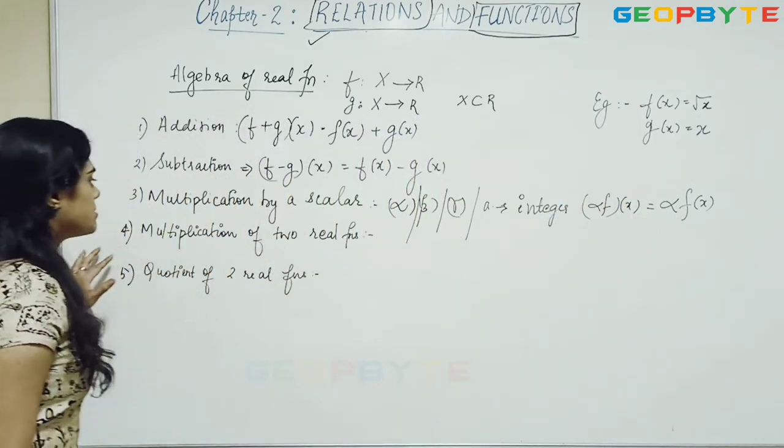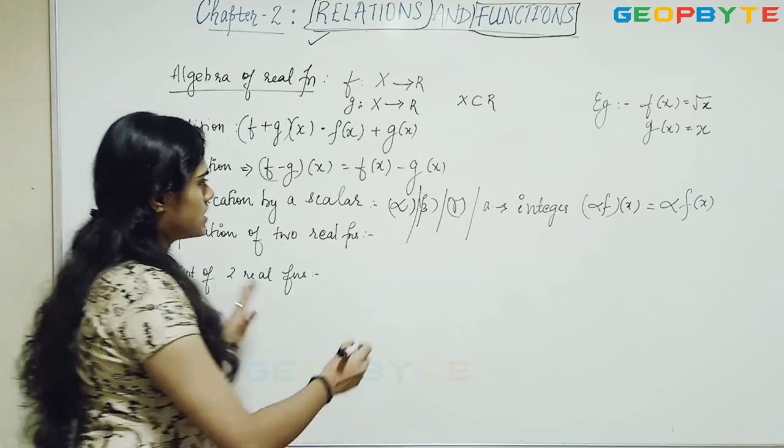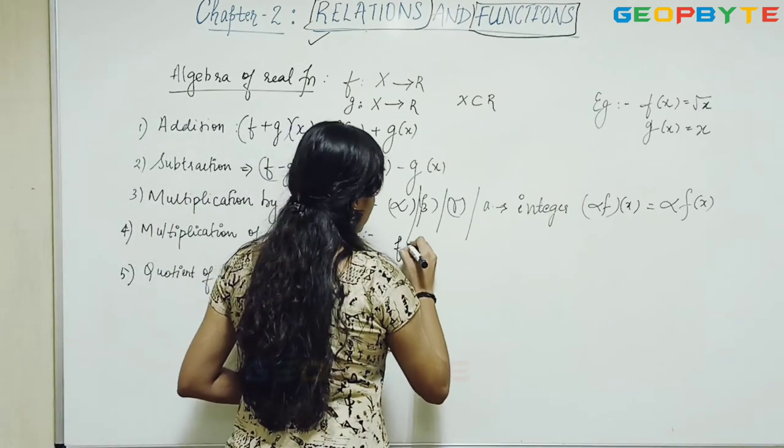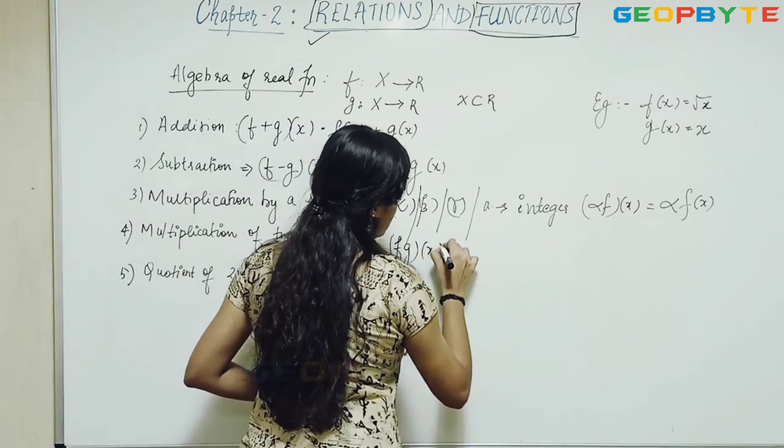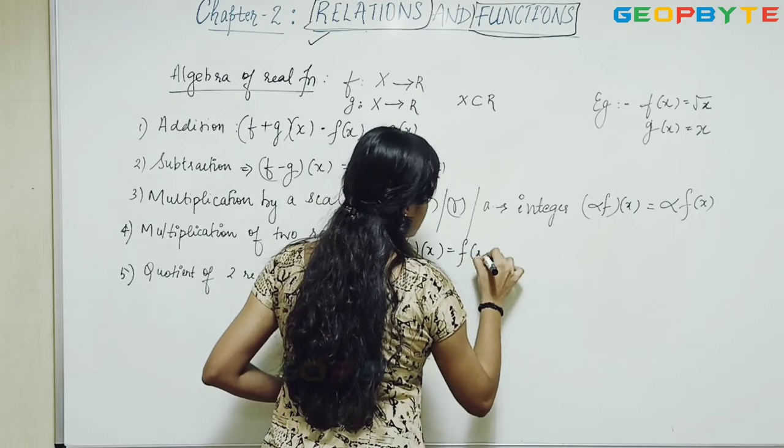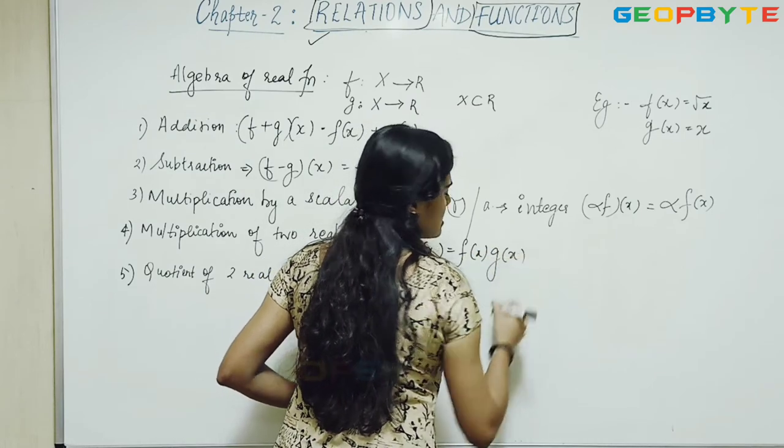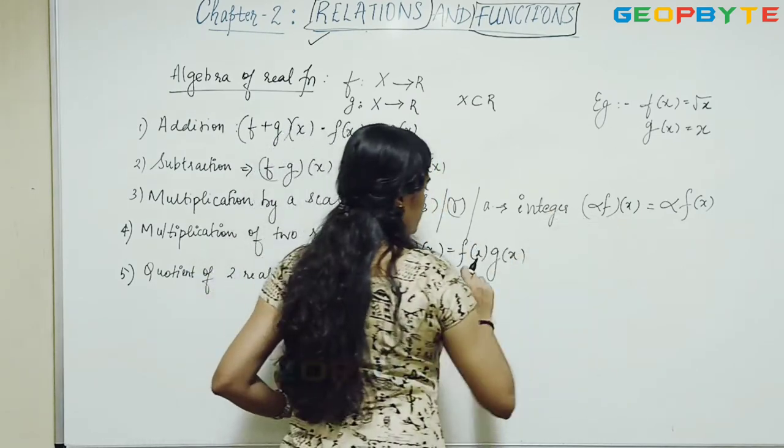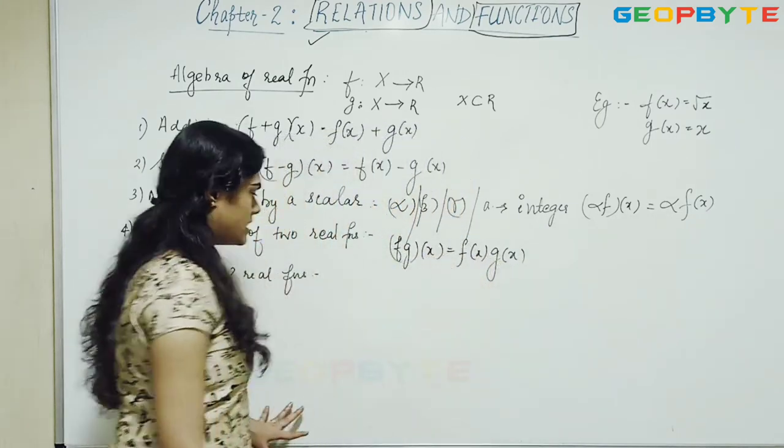And what is the multiplication of two real functions? That is, f times g of x is equal to f of x into g of x. Similarly, instead of having a constant here, we have a function here.